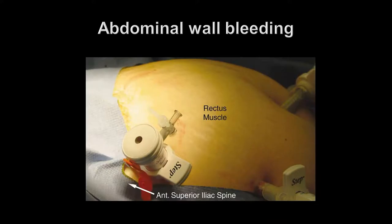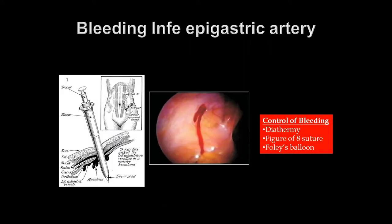Abdominal wall bleeding, especially due to injury to the inferior epigastric vessel, is a quite common complication. When placing a lower abdominal lateral trocar, it should be done under view and should be lateral to the lateral margin of the rectus to avoid this complication. Carefully observe the abdominal wall to identify the course of the inferior epigastric artery, then place the trocar well lateral to the vessel. If bleeding from the inferior epigastric vessel occurs, one may use bipolar diathermy, a figure-of-eight suture around the bleeding site, or remove the trocar and place a Foley catheter with the balloon inflated for tamponade effect.